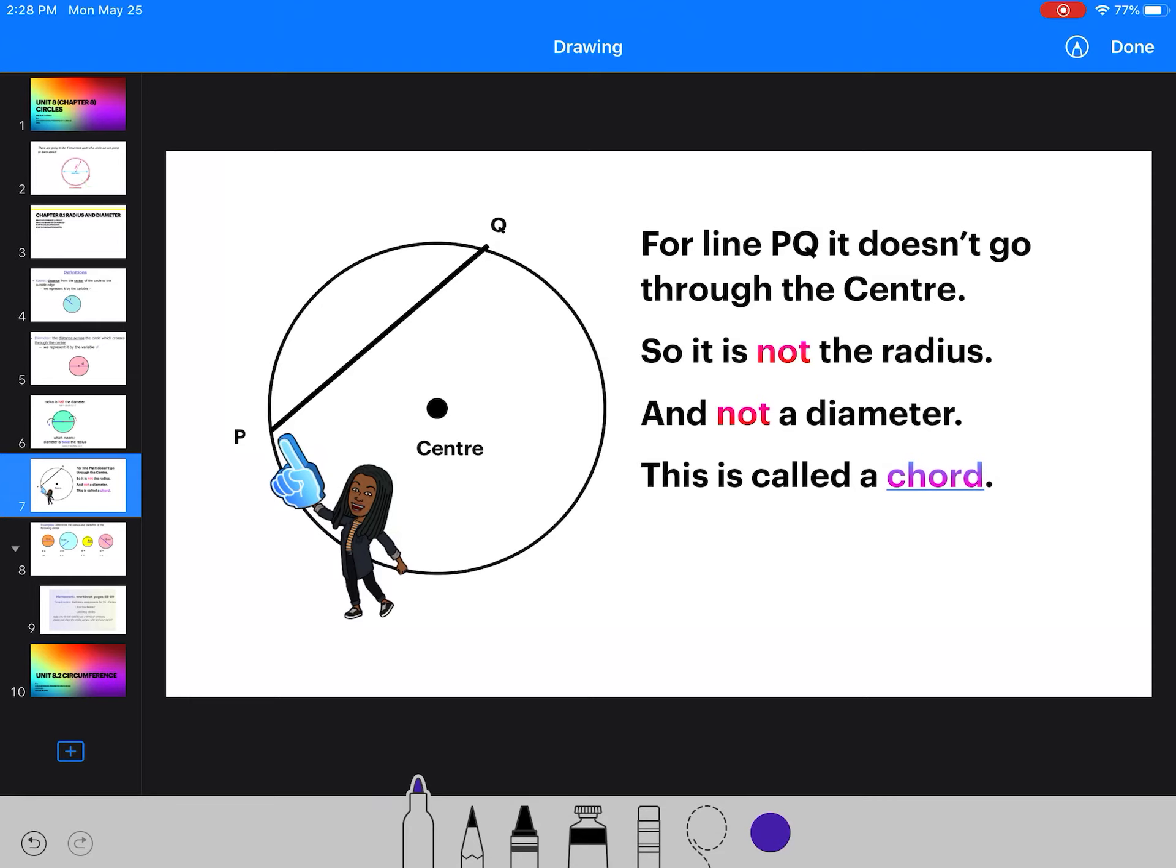Now, for this one, this little line PQ, it doesn't go through the center. So it's not a radius, and it's not a diameter. It is called a chord.